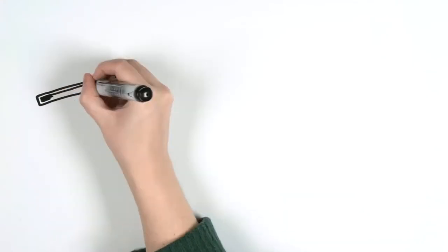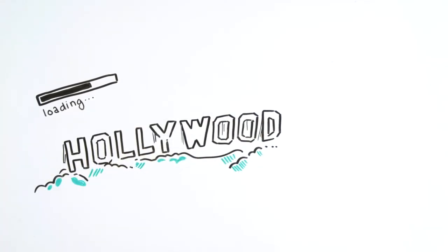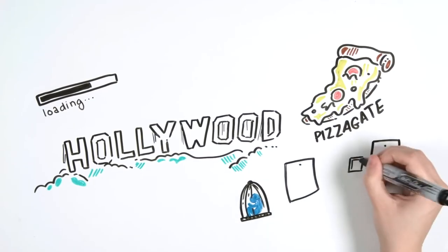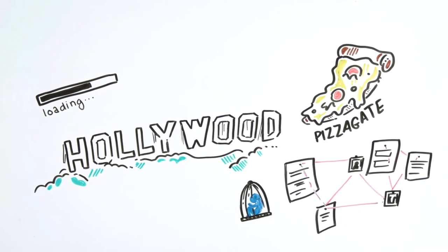It didn't take long for the code to be broken, and fans have referred to an elite trafficking and child abuse Hollywood group. This was known as Pizzagate, but it was never confirmed and remains just a conspiracy theory.